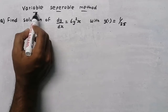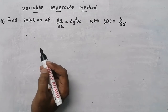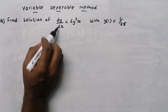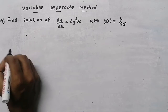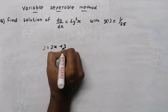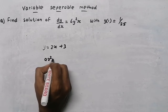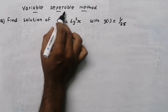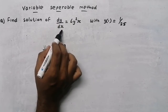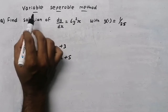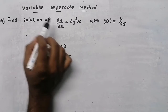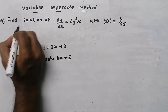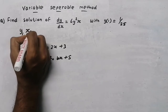In this video we are going to learn about the variable separable method, which we use in order to find the solution of a differential equation. A differential equation is written in the form dy by dx. If y equals 2x plus 3, it is a linear equation; ax squared plus bx plus 5 is an algebraic equation. To find the solution of a differential equation, we use the variable separable method. The variables in this differential equation are y and x.